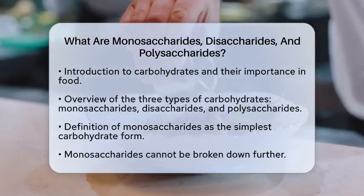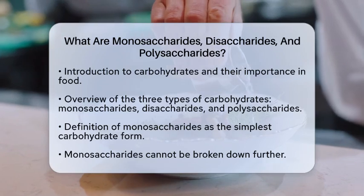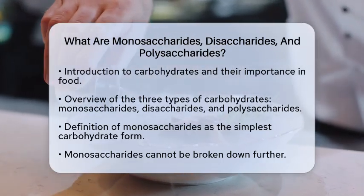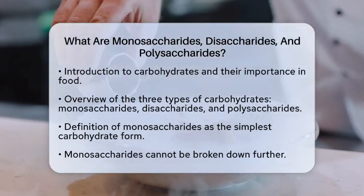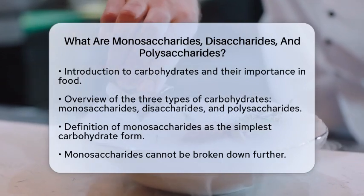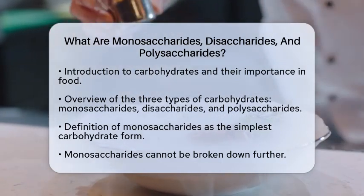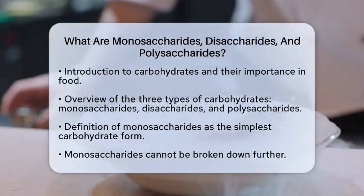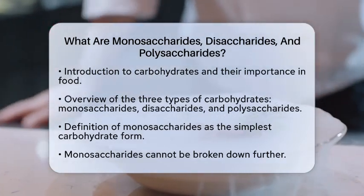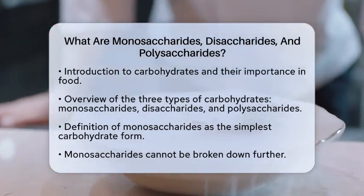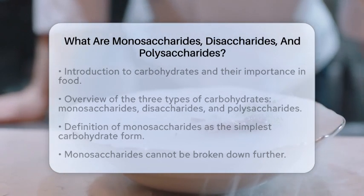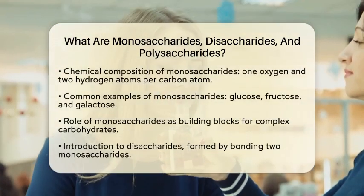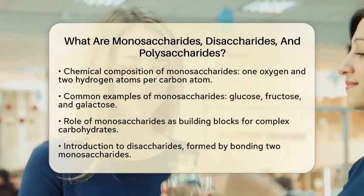These are the simplest form of carbohydrates. They cannot be broken down into smaller carbohydrate units. Monosaccharides consist of one oxygen atom and two hydrogen atoms for each carbon atom. Common examples include glucose, fructose, and galactose.